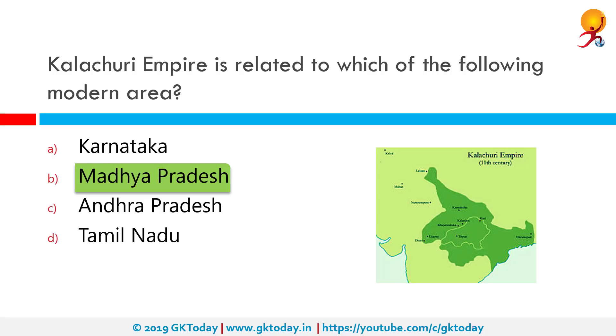They are also known as Haihayas or the early Kalachuris, to distinguish them from their later namesakes. The Kalachuri territory included present-day Gujarat, Madhya Pradesh and Maharashtra.